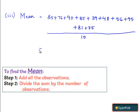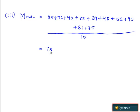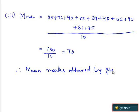When we solve this, we get 730 by 10 which is equal to 73. Therefore, mean marks obtained by the group is equal to 73.